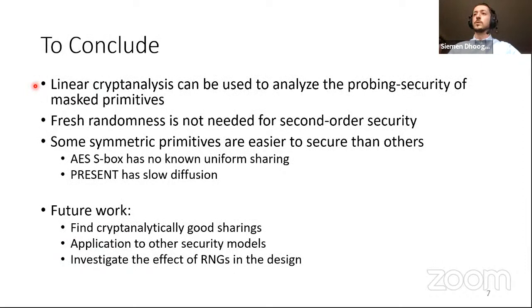So in short, our work is just about using linear cryptanalysis to analyze the probing security of masked primitives. So it kind of gives the interaction between symmetric key cryptanalysis and masking. We show, and as far as I know, first with normal masking methods that fresh randomness is not needed for second order security. And we find that some symmetric primitives are easier to secure than others. AES is quite difficult because of its S-box and Present for its diffusion layers. Interesting future work would be, well, we needed good cryptanalytic properties of masked S-boxes. No one has investigated that, so that would be interesting. We used the probing model, but it would be interesting to find the bound in the noisy leakage model. I think that's a difficult point, but it would be interesting. And we said that you can include the RNG. I think that's worth further investigation. And with that, I would like to leave it. If you have any questions.